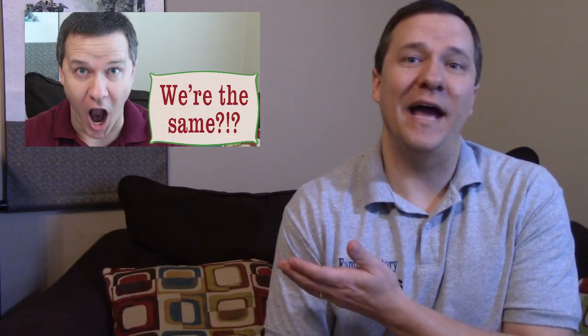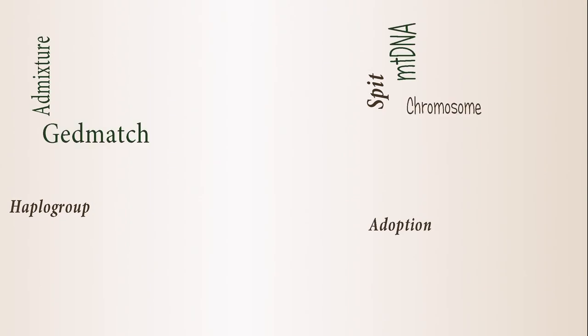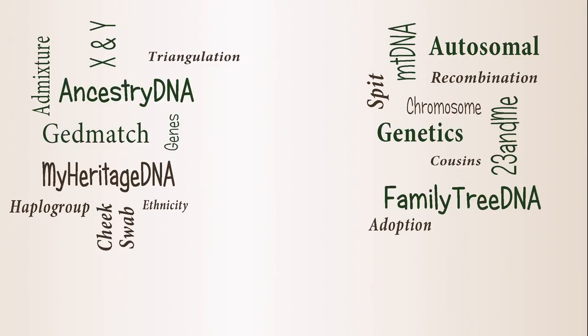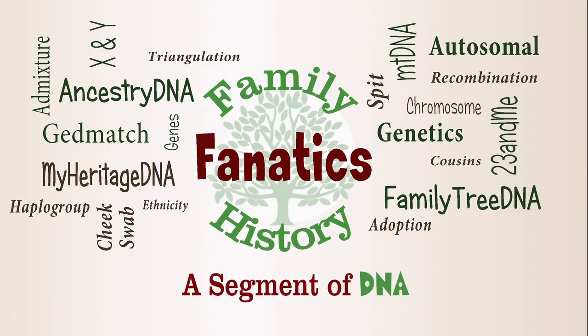In a previous video about how we're 99.9% the same, I used the example of ABO blood groups. A question came up about the RH blood group and whether or not we can see that in genetics as well. I'm Andy Lee with Family History Fanatics and this is a segment of DNA.